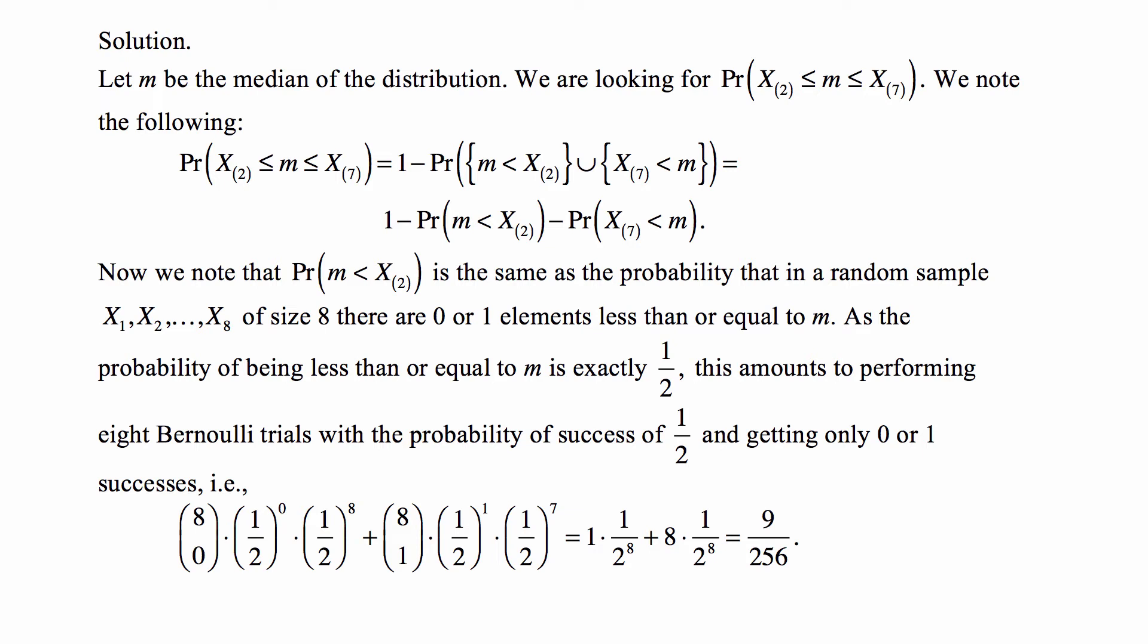But the second order statistic x_2 is definitely less than or equal to x_7. So if one of these events happen, the other one can't happen. Therefore, the two events are mutually exclusive. So the probability of the union is the sum of the two probabilities. 1 minus the sum is 1 minus the first one minus the second one. All we need to do is work with these two events and figure out their chances.